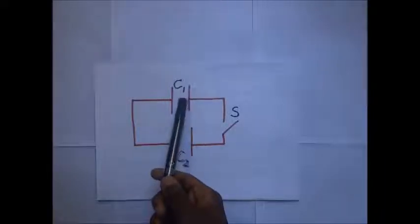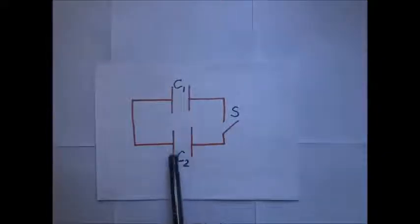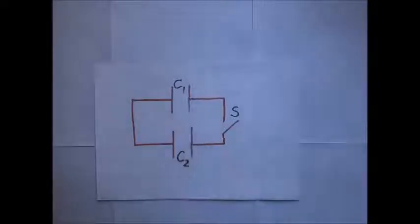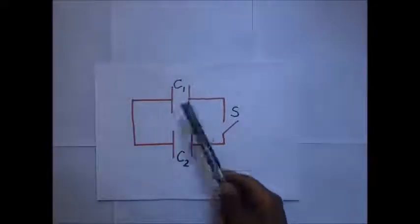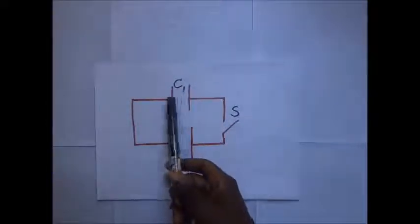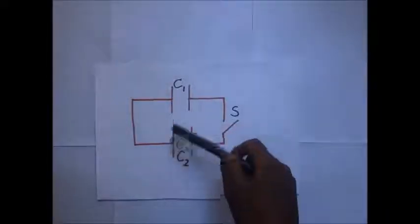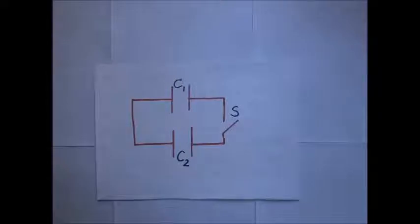We may have capacitor C1 having a certain amount of charge on its plates, and capacitor C2 having a certain amount of charge as well. When we connect these two capacitors, if one has a higher potential difference than the other, charge will flow from the plates with higher potential difference towards the capacitor with lower potential difference. Charge stops flowing when the potential difference across both capacitors becomes the same — in other words, they have been connected in parallel.